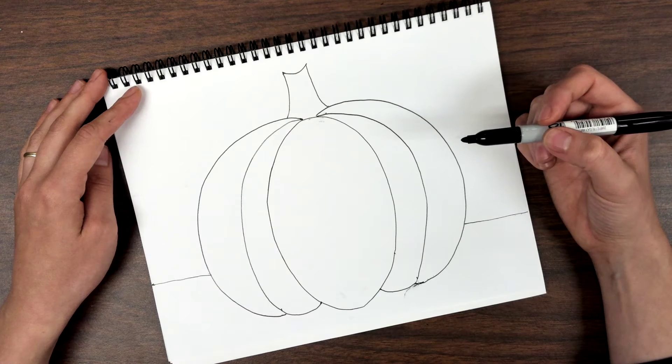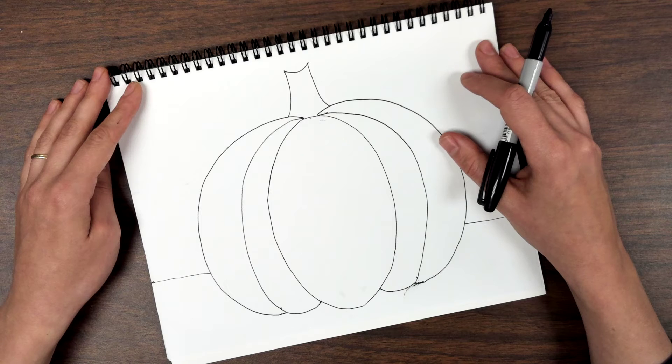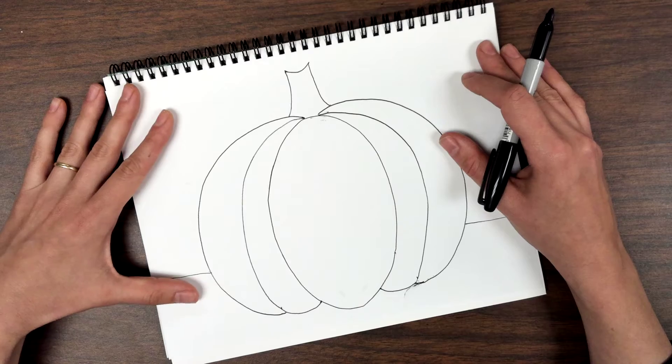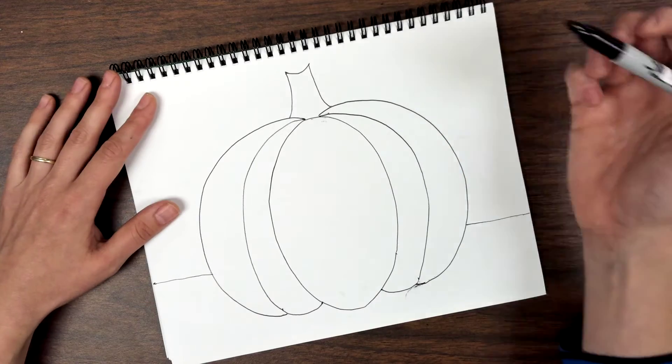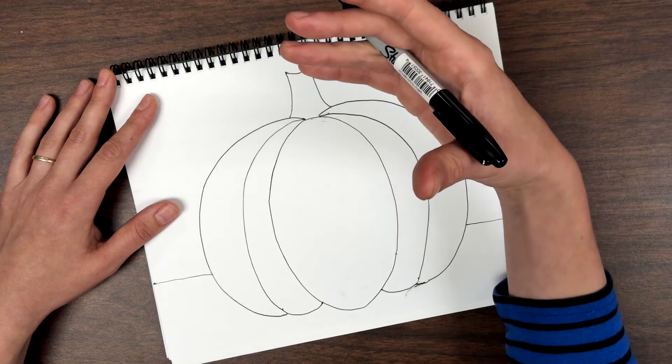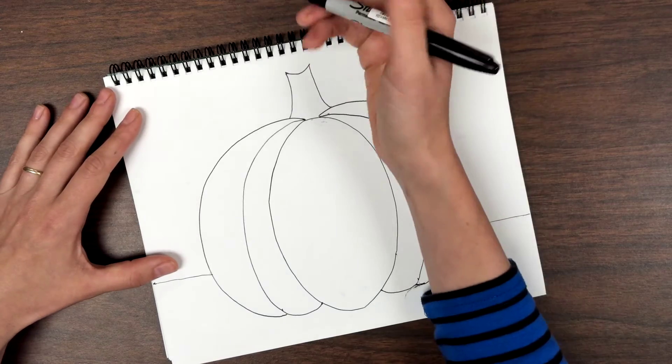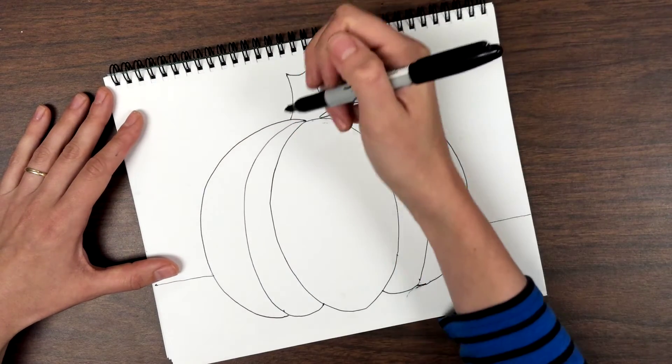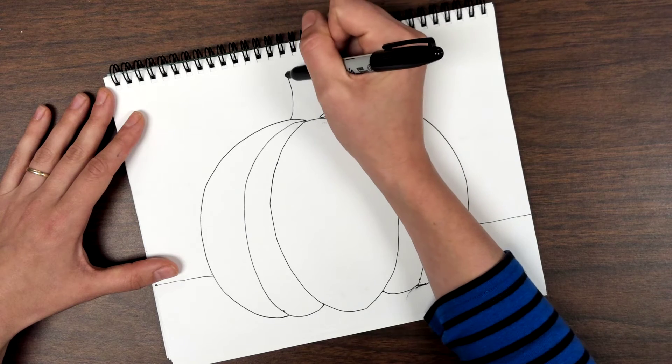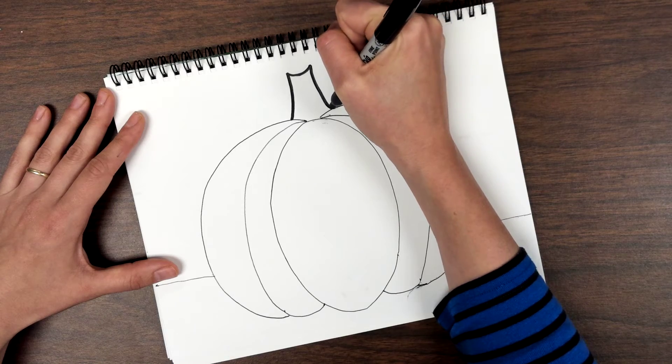What we're going to do in this step is outline our pumpkin. So when I say outline, I mean to trace over all of your pencil lines. So when I outline, I like to start at the top, especially if you're using a washable marker. Be careful, they tend to smear. So take your time and try not to let your hand drag if you're using a washable marker. But I like to start at the top and work my way down when I trace.